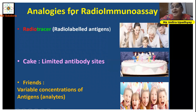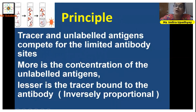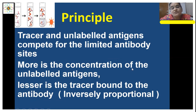The analogies shown in the first slide map as follows: the radio-labeled antigens represent the family and the birthday boy; the limited antibody sites are like the birthday cake; and the friends represent the variable antigen concentrations. On this basis, the principle can be understood: the tracer and unlabeled antigens compete for the limited antibody sites. The more the concentration of the unlabeled antigens, the lesser the tracer bound to the antibody — an inverse proportion.